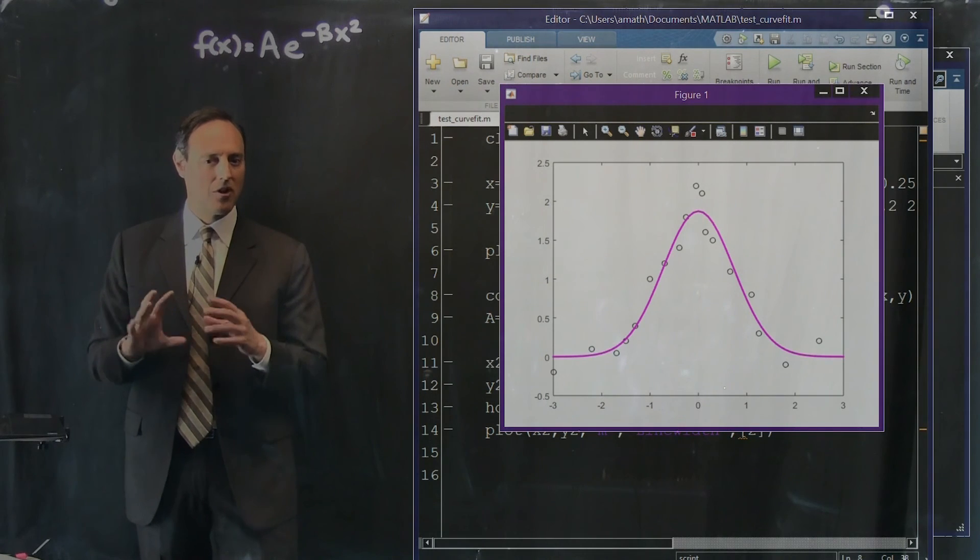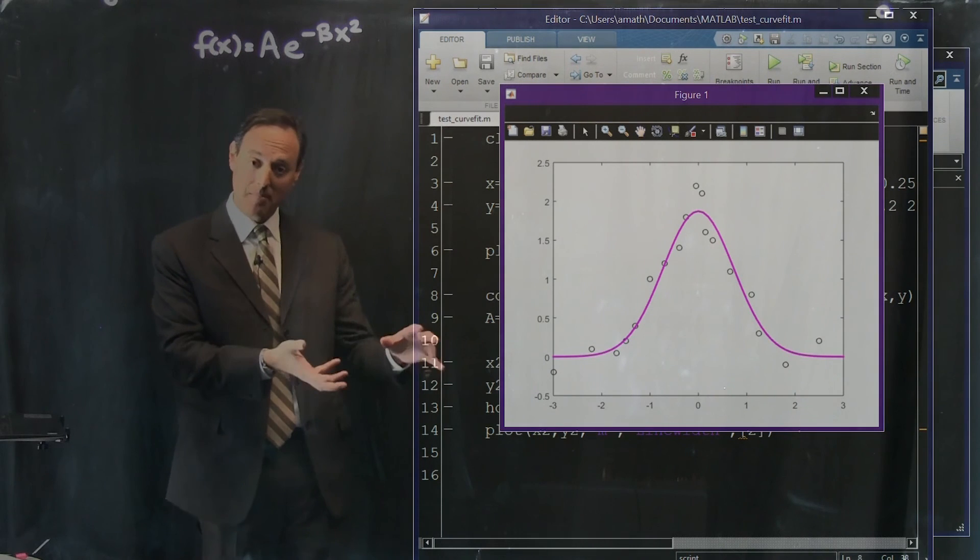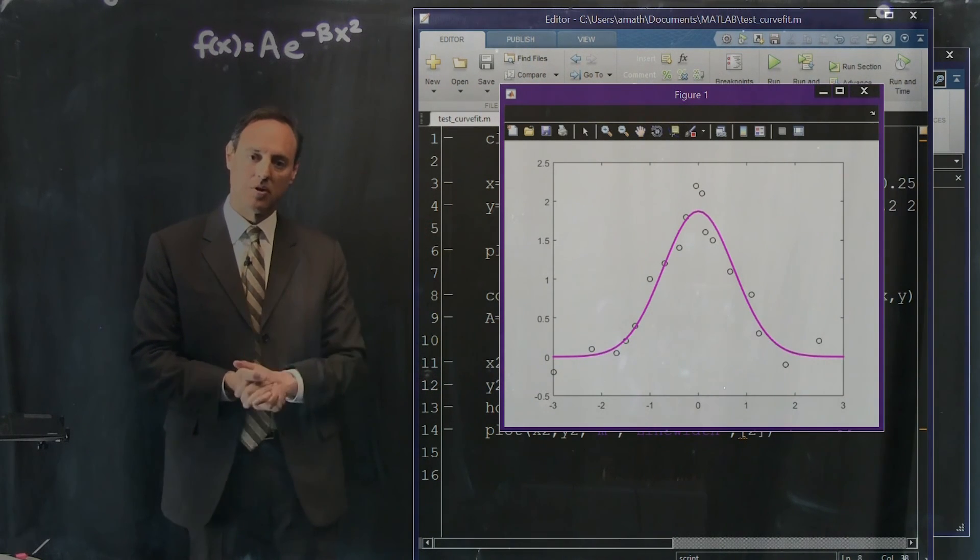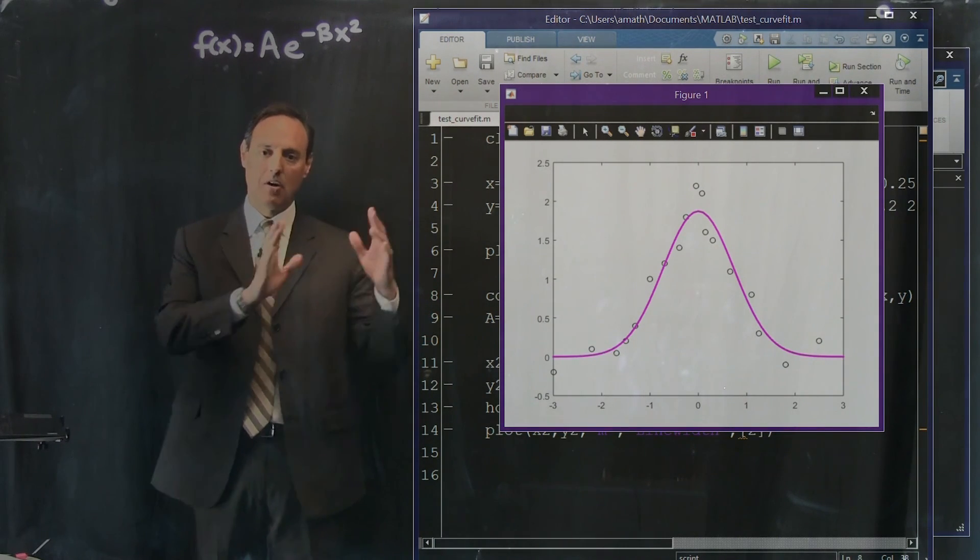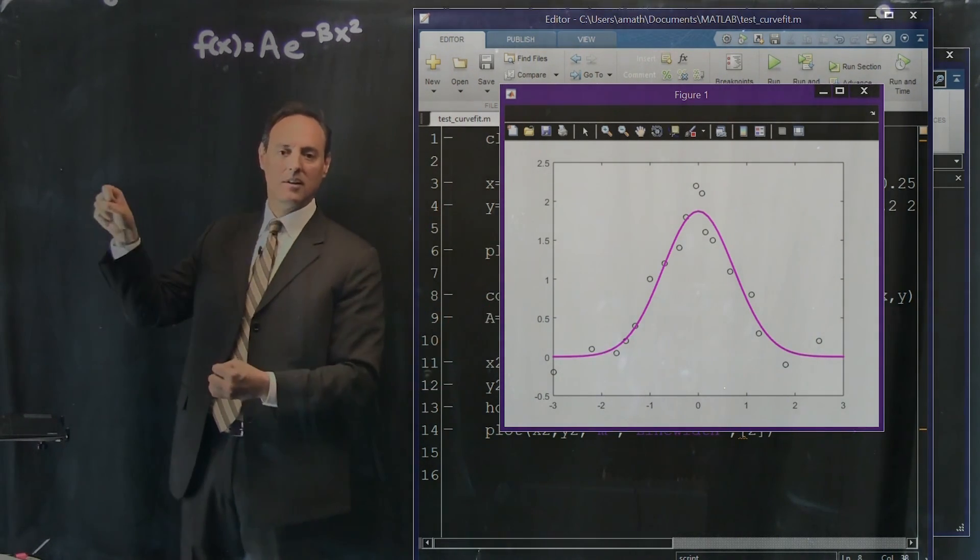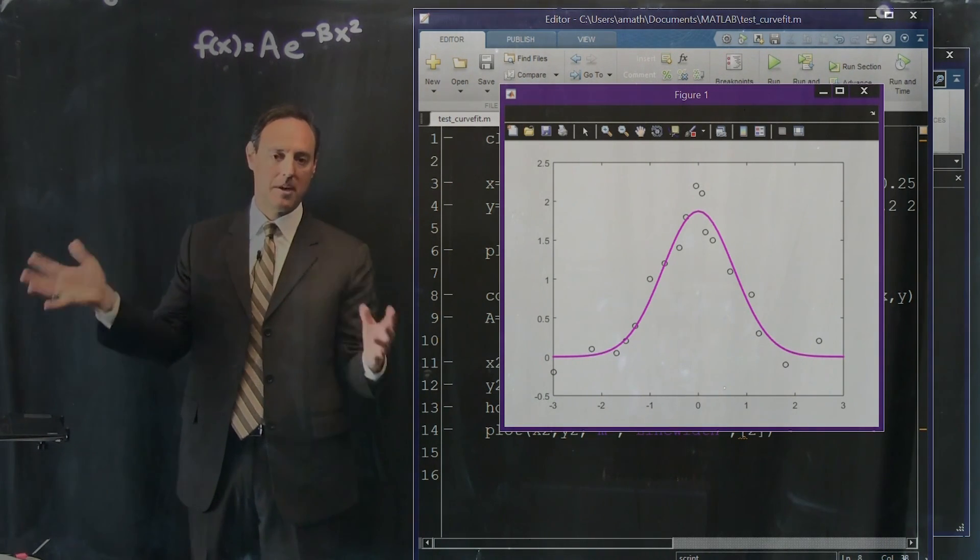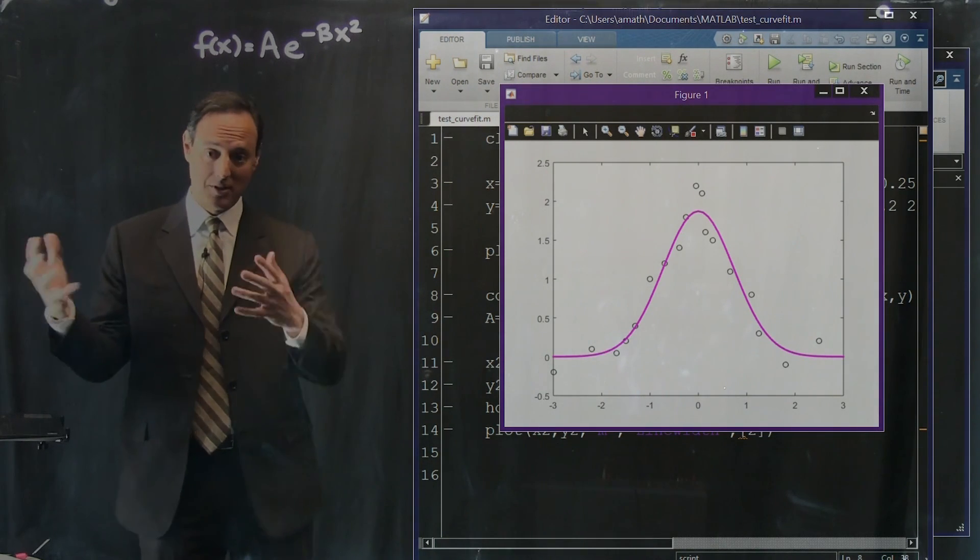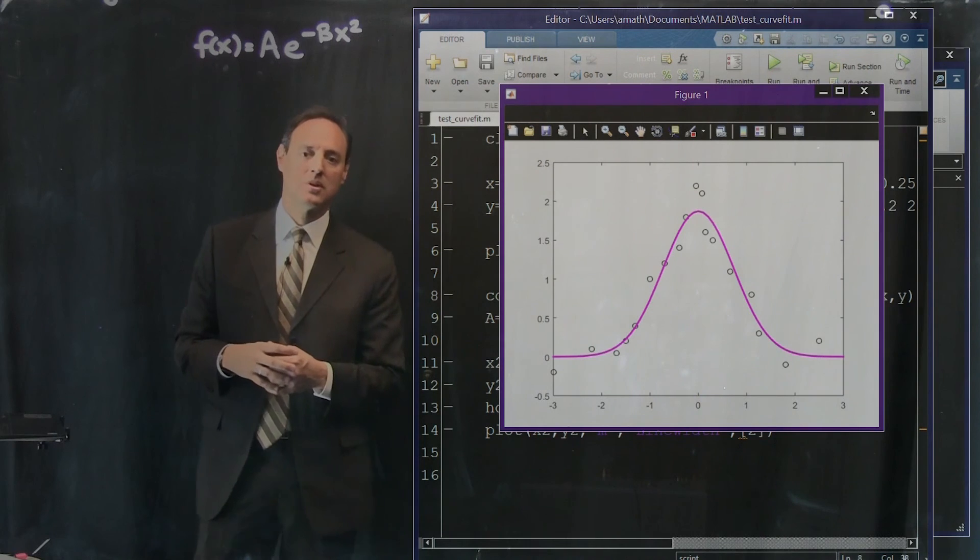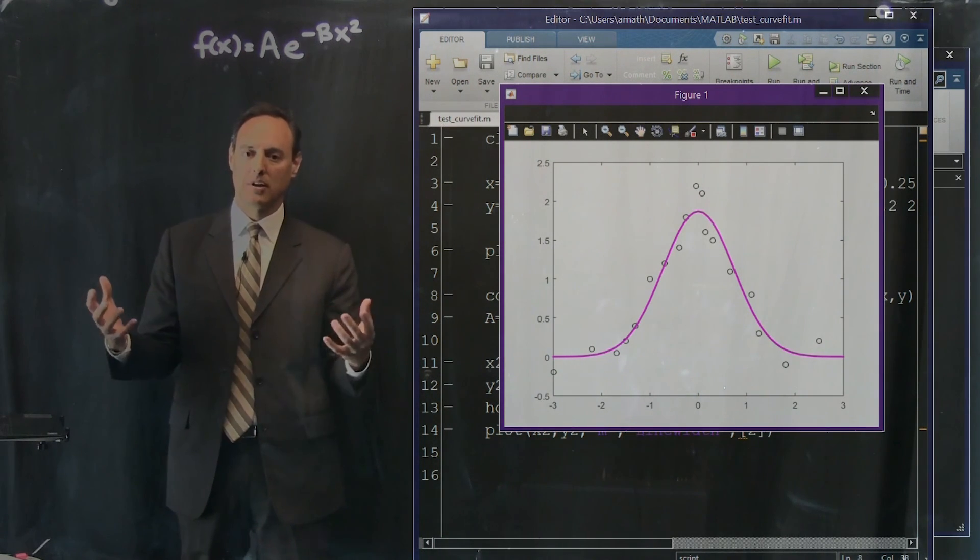And notice that we're using this optimization not to sort of say, find the minimum values of this. We're using it to minimize the error which is associated with this least square fitting procedure. Okay, that is it for the curve fitting. We've done now nonlinear curve fitting, least square, polynomial fitting, as well as interpolation. And all three methods are available to you. MATLAB has a whole suite of these simple-to-use curve fitting tools that you now have access to as well and you can play around with in looking at data.